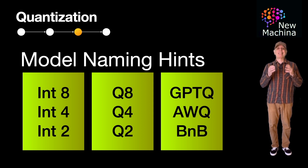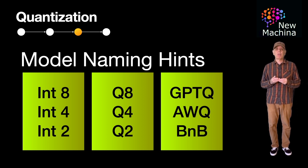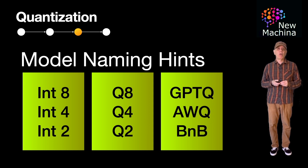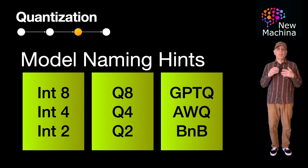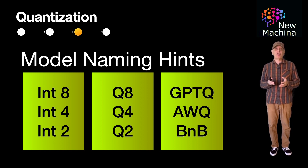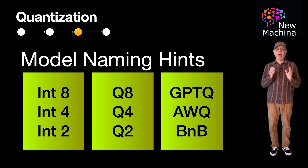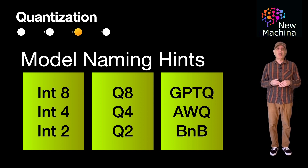As a system builder, it's good to know that model naming conventions can help you identify a quantized model. But when you find an interesting model, you definitely want to read the model notes to get a detailed description and understanding of the quantization methods used in its creation. So now you should have a good conceptual understanding of LLM quantization. You should understand the compute and memory cost benefits and potential loss of accuracy trade-off when using a quantized LLM.